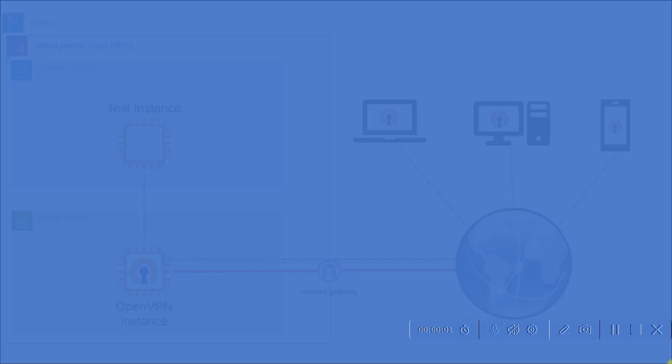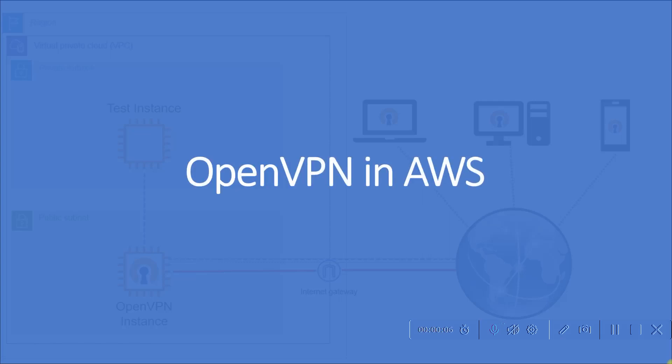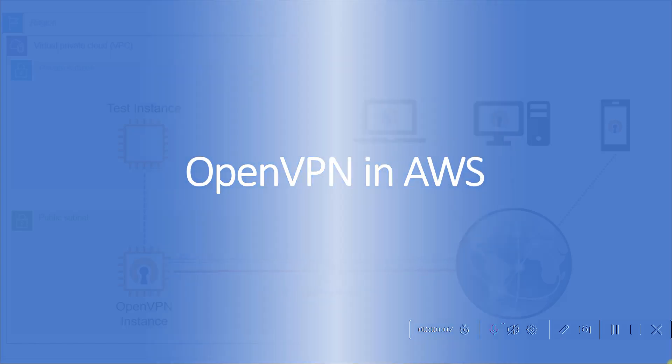Hello friends, welcome to this new lab. In this lab we are going to see how to configure OpenVPN in AWS. Let's see the architecture first.